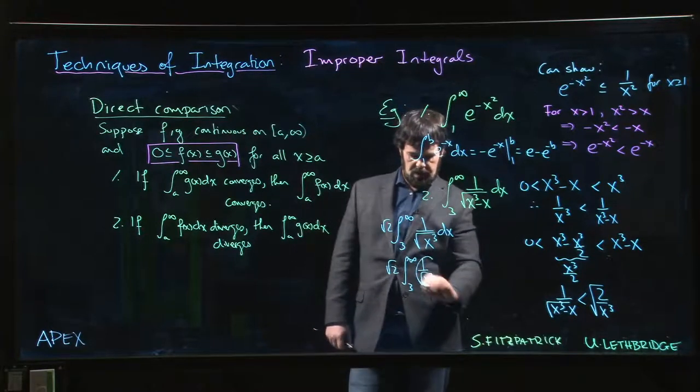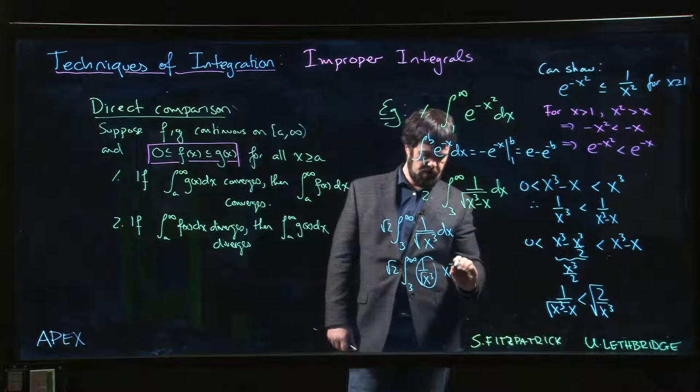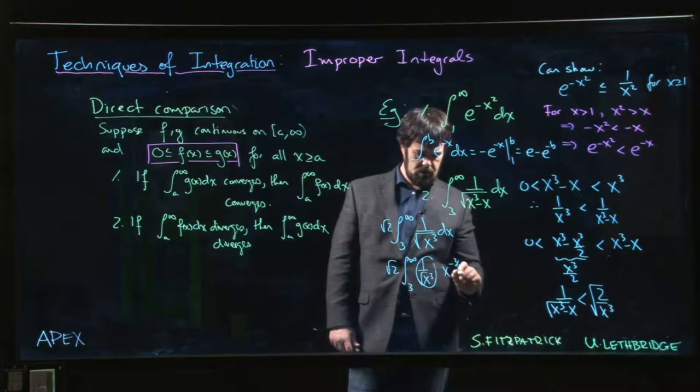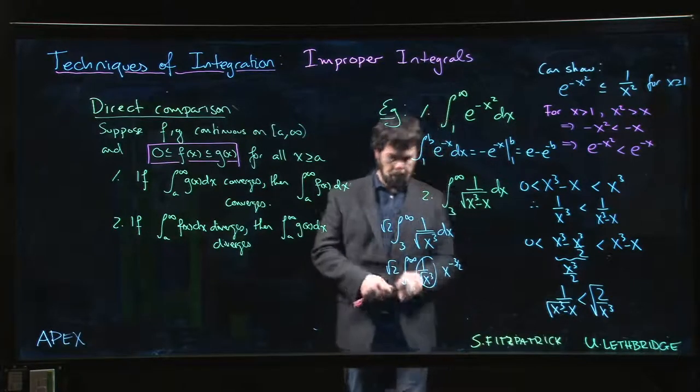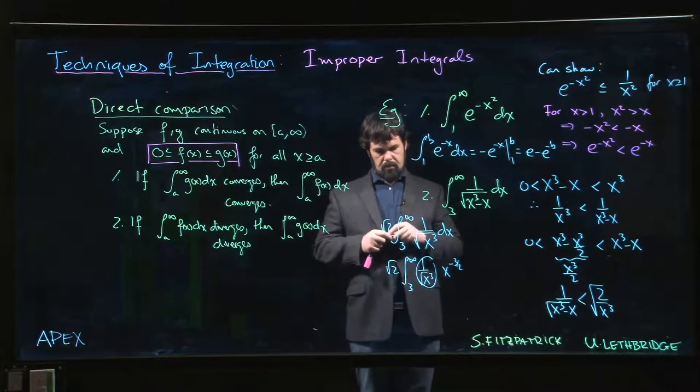So this is root 2, 3 to infinity, 1 over x cubed. Sorry, that's x to the minus 3 over 2. So we're still okay.